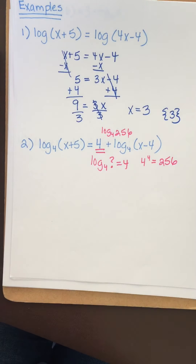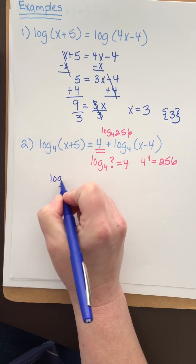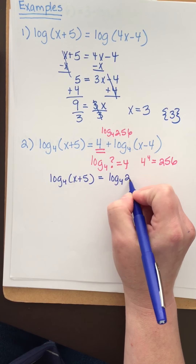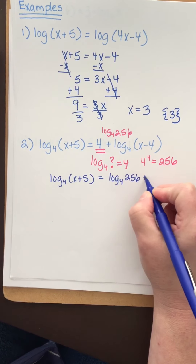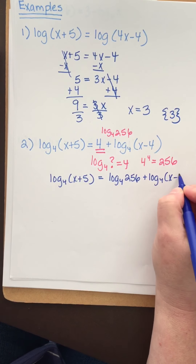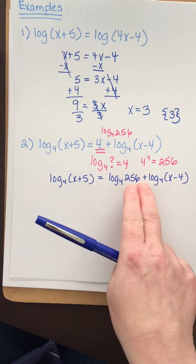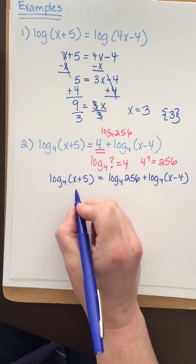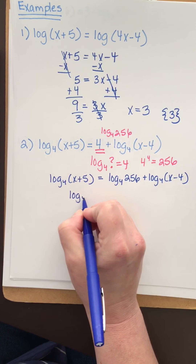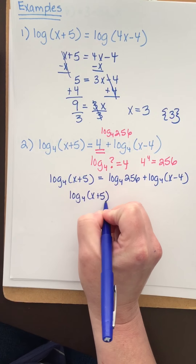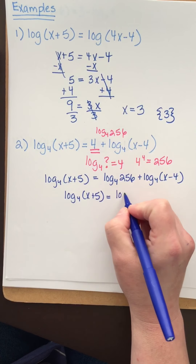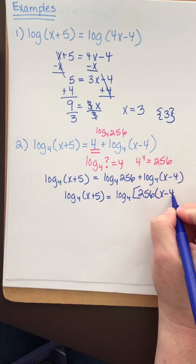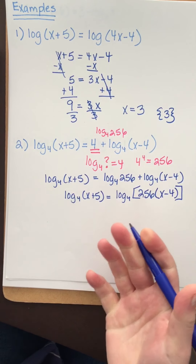So let's rewrite this. We'll have log base four of x plus five equals log base four of 256 plus log base four of x minus four. When you have logs with the same base being added, you can condense it and change it to multiplication. So now I have log base four of x plus five equals log base four of 256 times x minus four. Now I can use that one-to-one property.